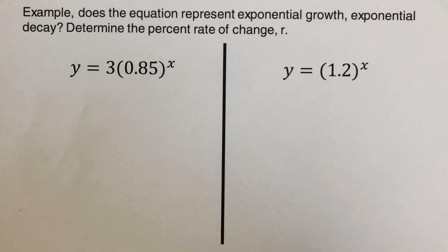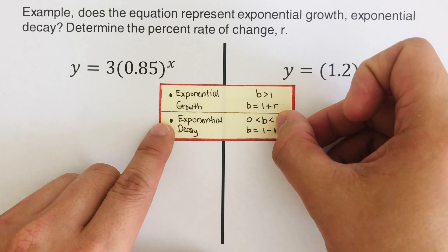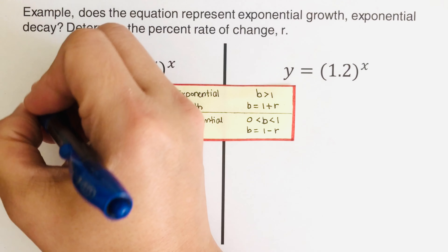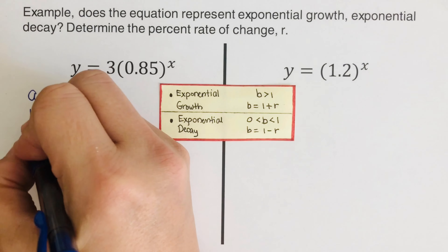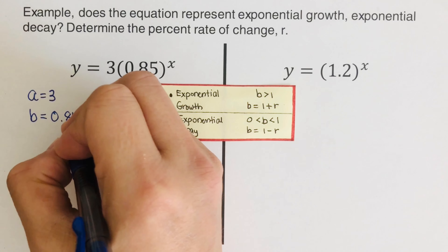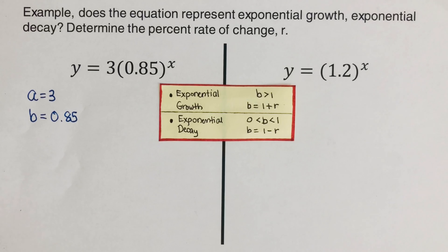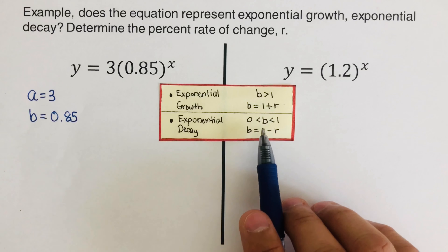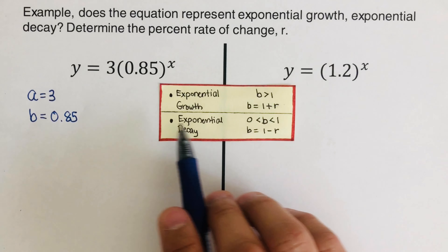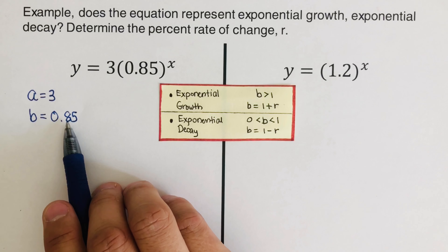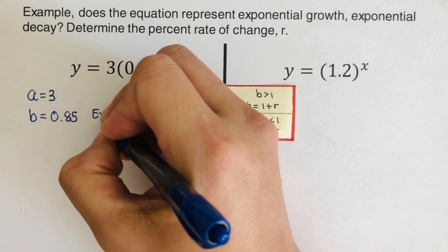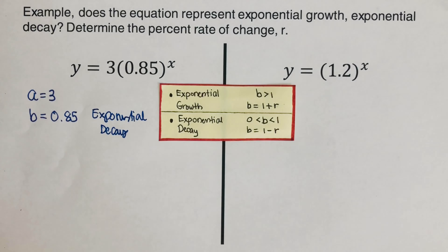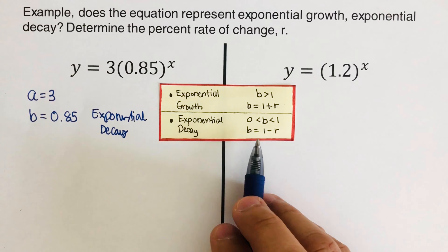Now let's go over the next problem. Looking at the notes from the first slide, our initial value 'a' is 3, and our b is 0.85. Applying the rule: if b is greater than 1 it's exponential growth; if b is greater than 0 but less than 1 it's exponential decay. Since 0.85 is less than 1 but greater than 0, this is an example of exponential decay.